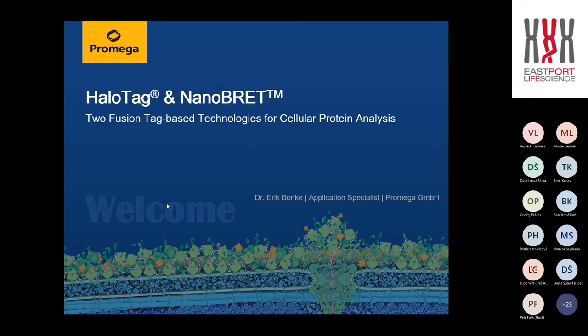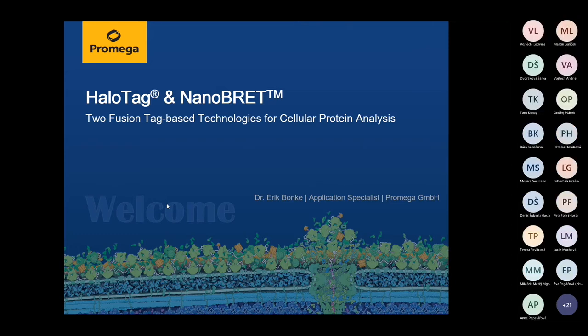One of them is called HaloTag — a quite universal fusion tag that you can use for lots of applications. The second technology is called NanoBRET, which can in particular be used for studying protein-protein interactions in living cells. In the NanoBRET PPI system, HaloTag is a key component. I'll also briefly discuss NanoBRET for studying protein-ligand interactions — the interaction of a small molecule or peptide with a protein of interest in living cells.